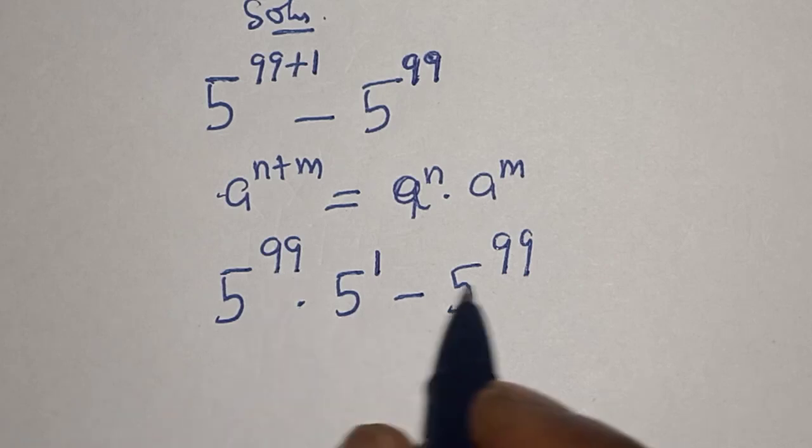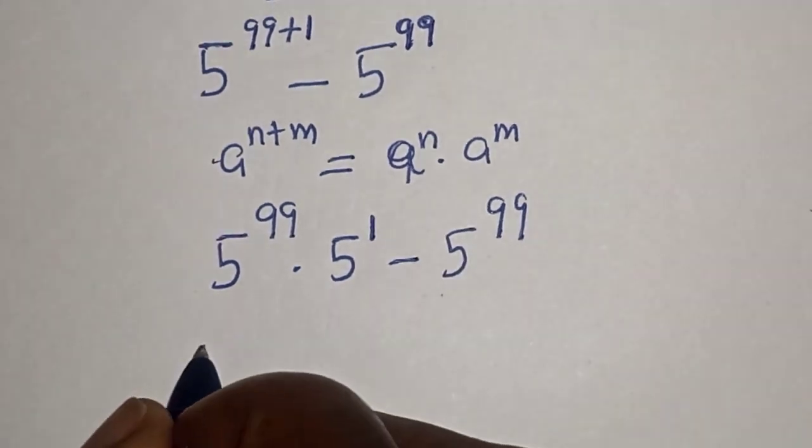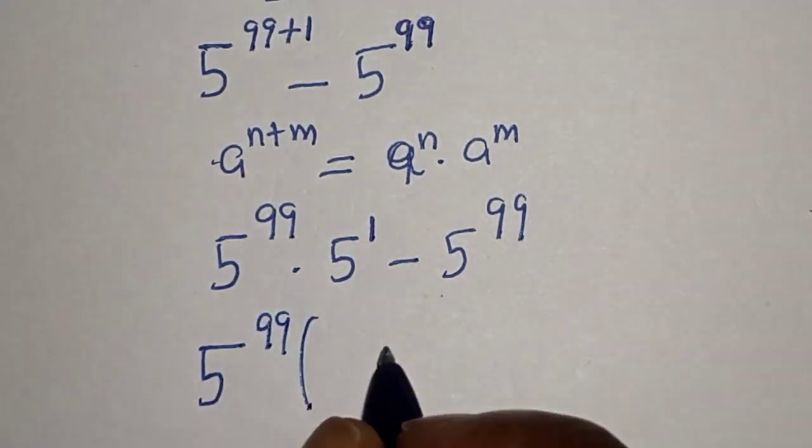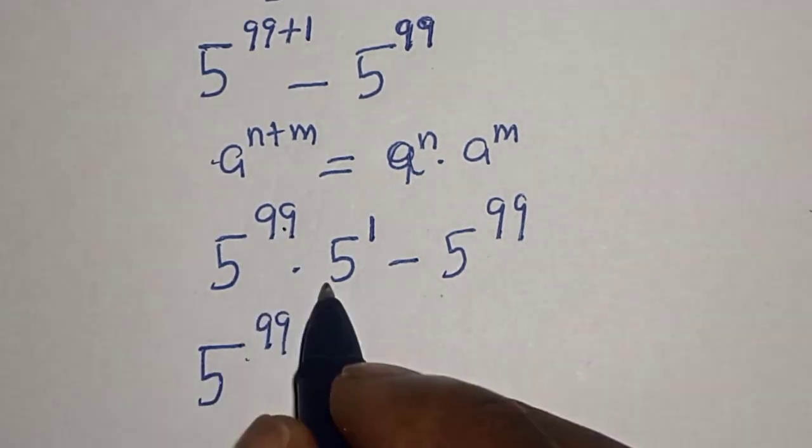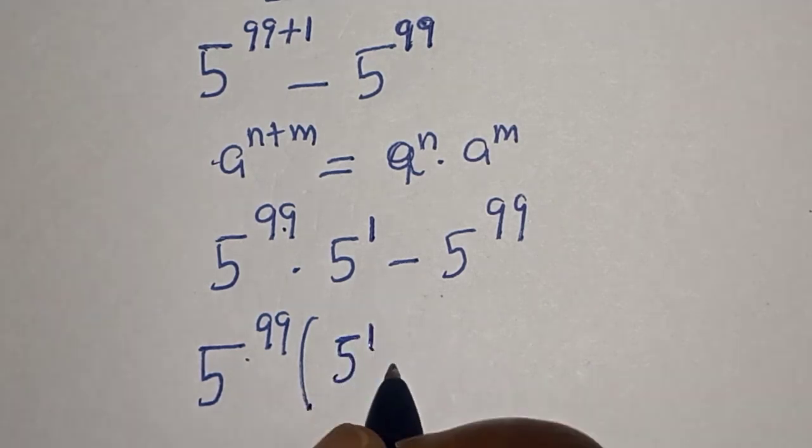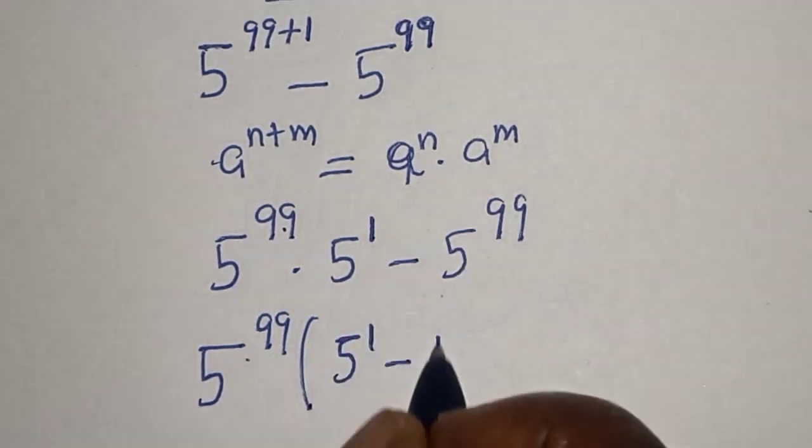Then 5 raised to power 99 is common. Let's bring it out. 5 raised to power 99 multiplied by this divided by this. We have 5 raised to power 1 minus this divided by this, 1.